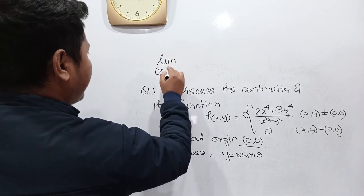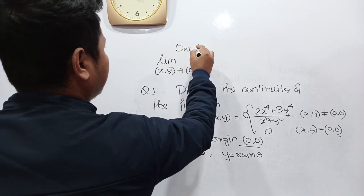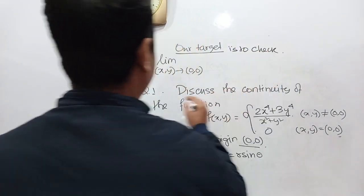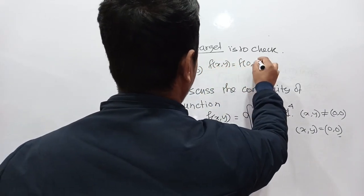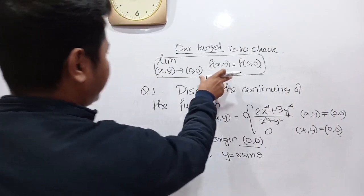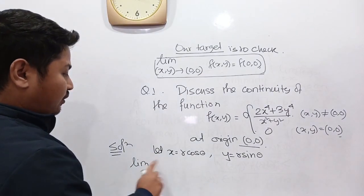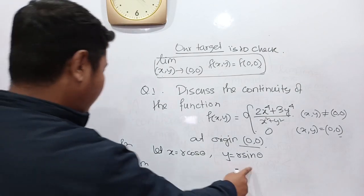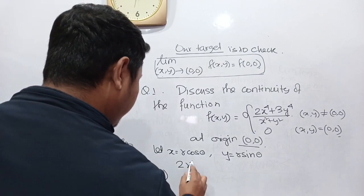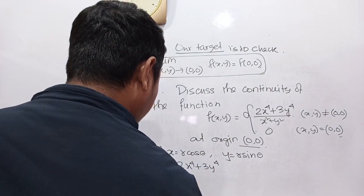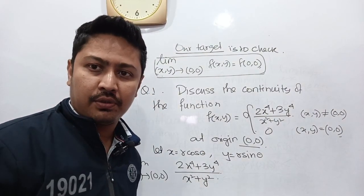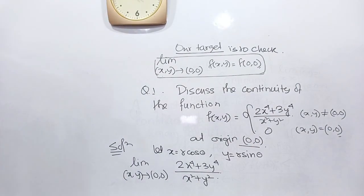Our target is to check: does limit as (x,y)→(0,0) of f(x,y) equal f(0,0)? This is the definition of a continuous function for two variables. So let x = r·cos θ, y = r·sin θ. Then calculate limit of (2x⁴ + 3y⁴)/(x² + y²). If this limit equals f(0,0), then the function is continuous at the origin.